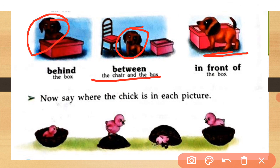Behind means 'ke pichhe', between means 'ke beech mein', and in front of means 'ke saamne'. The words behind, between, and in front of are place words that indicate the position of the noun. Here the noun is 'dog', and these words tell us where the dog is.